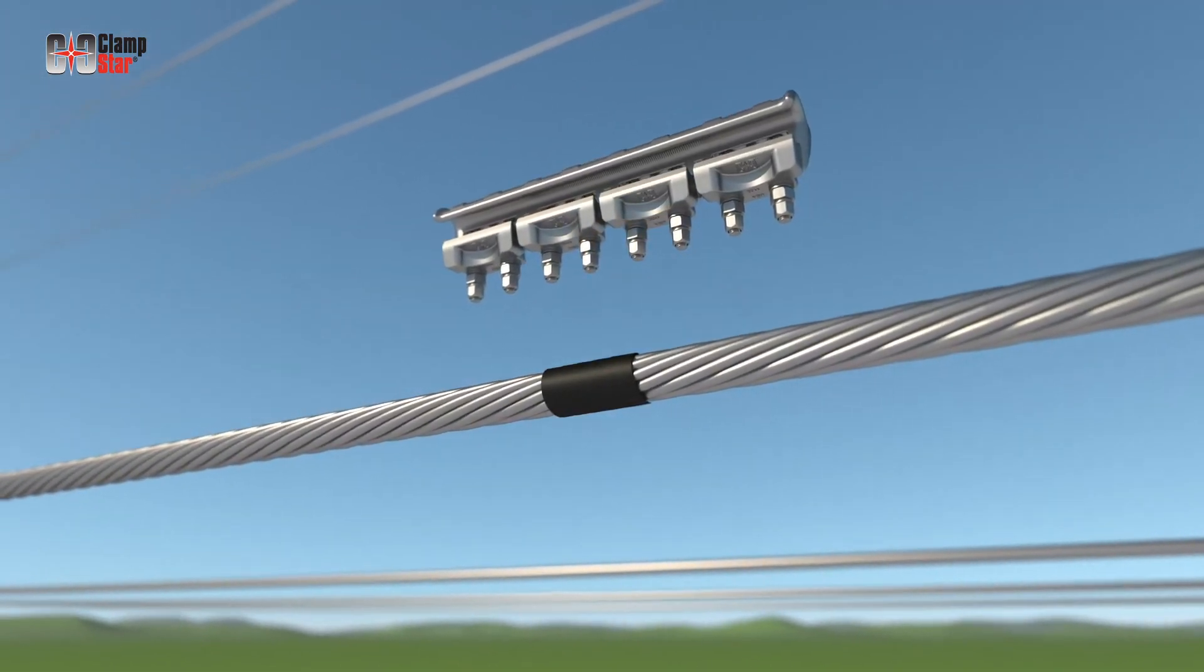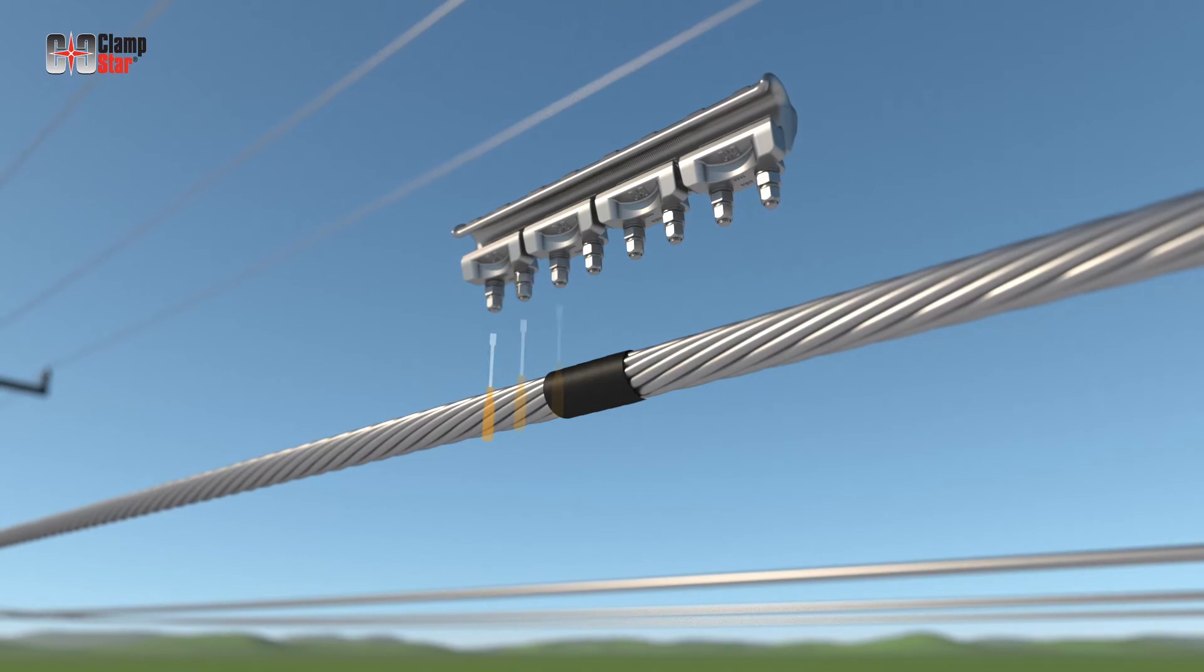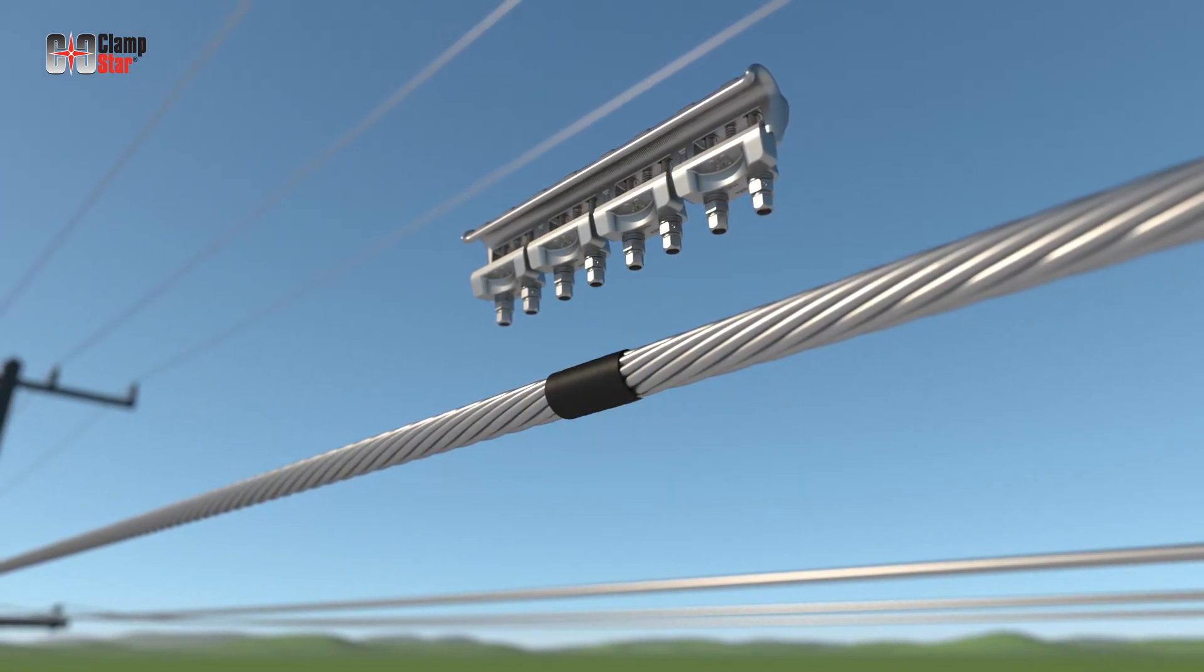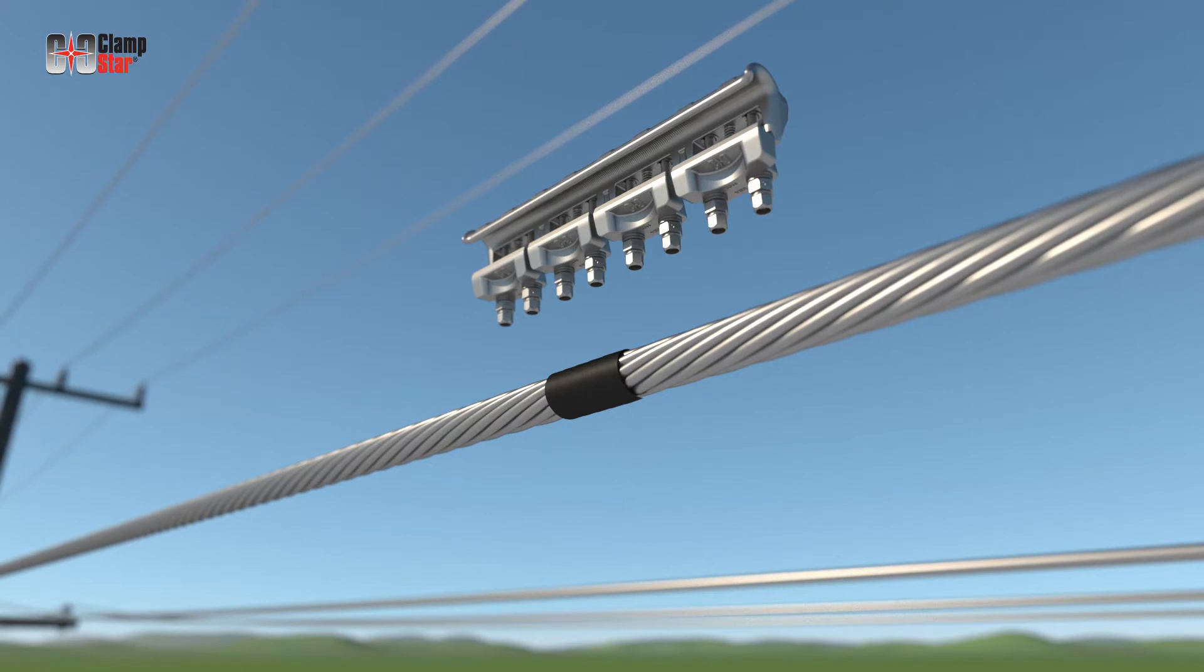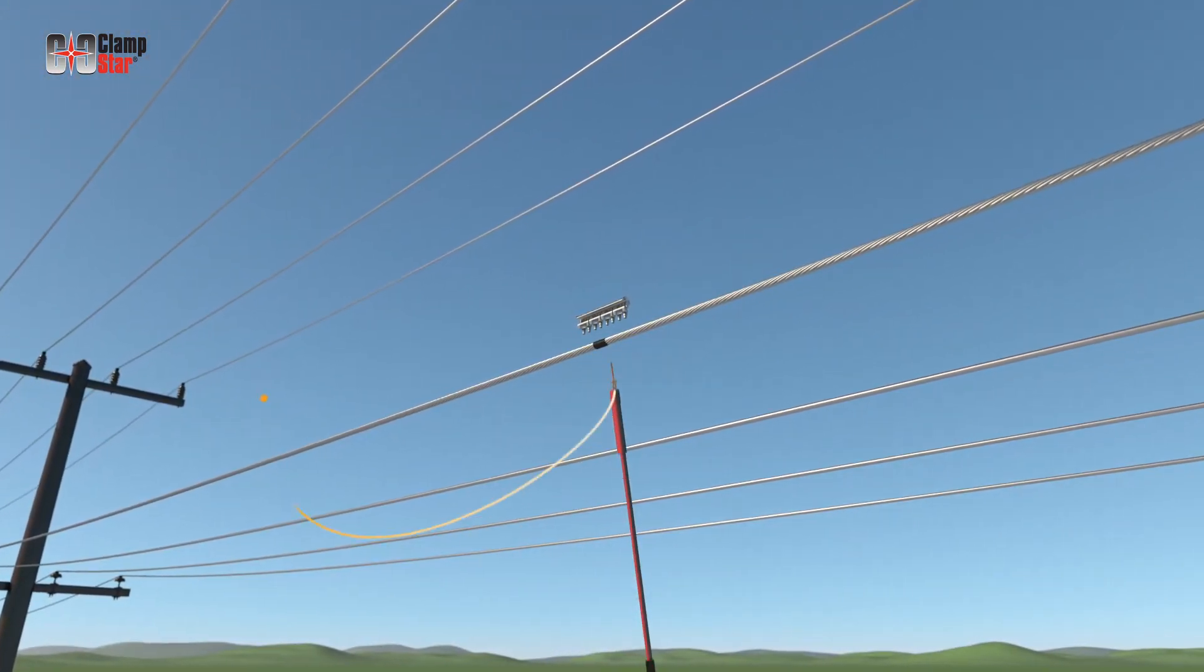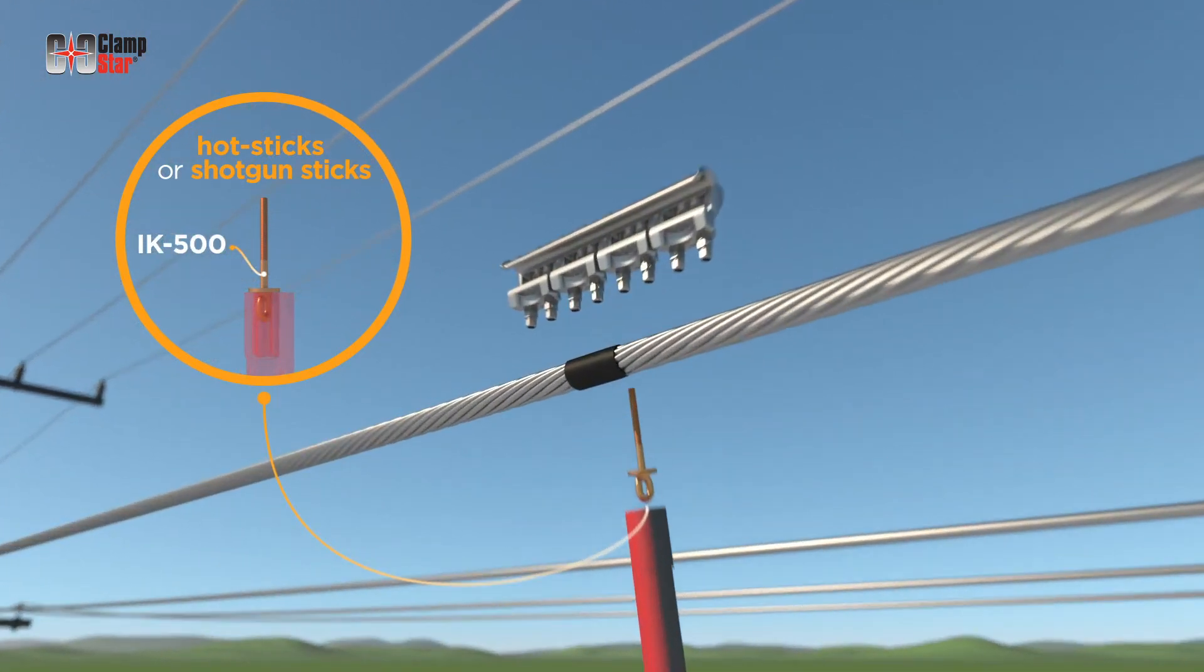Before placing the CRU unit on the conductor, loosening the nuts may be necessary to ensure the keepers are opened wide enough to accept the conductor. In addition to glove installation, ClampStar units are designed to be installed with hot sticks or shotgun sticks.